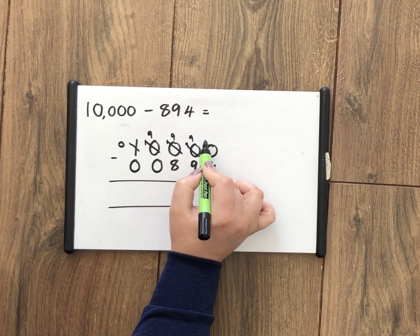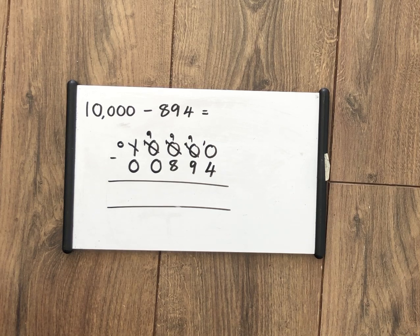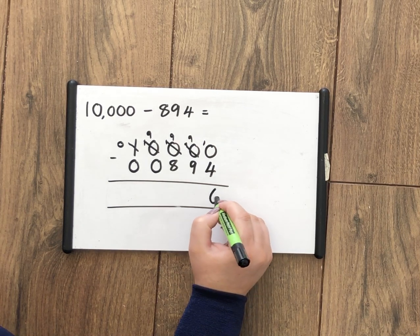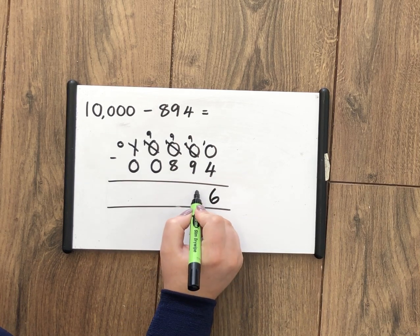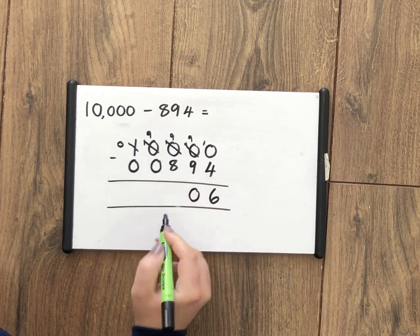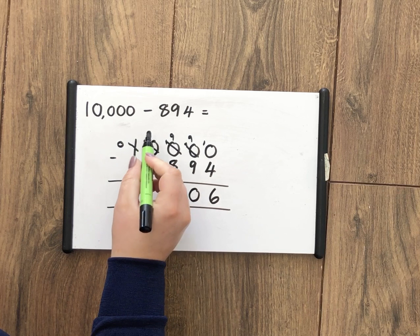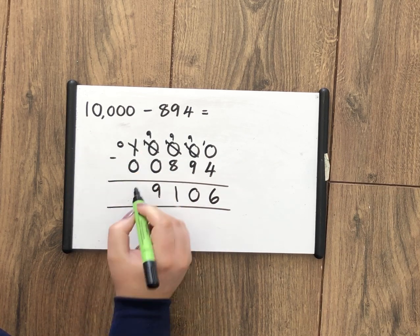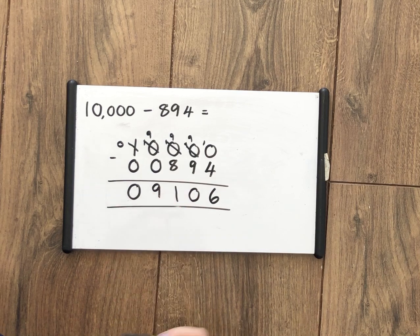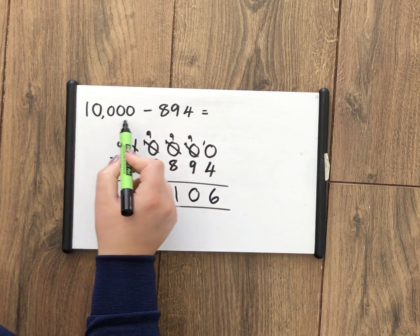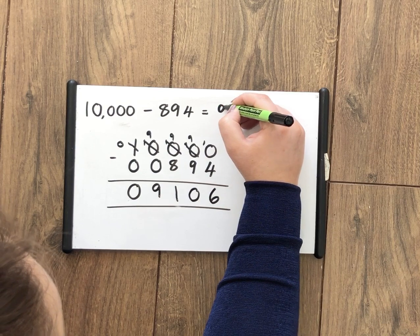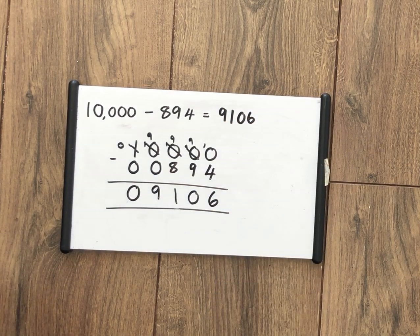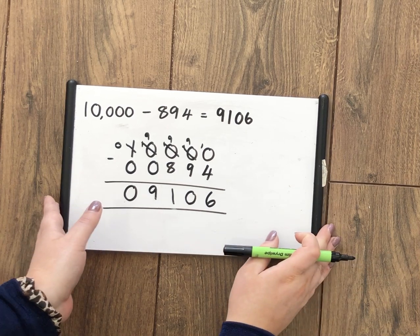Now I've got something I can do. So 10 take away 4 is 6, 9 take away 9 is 0, 9 take away 8 is 1, 9 take away 0 is 9, nothing take away nothing is 0. I will put that in just to help me. So here, 10,000 take away 894 is 9,106.